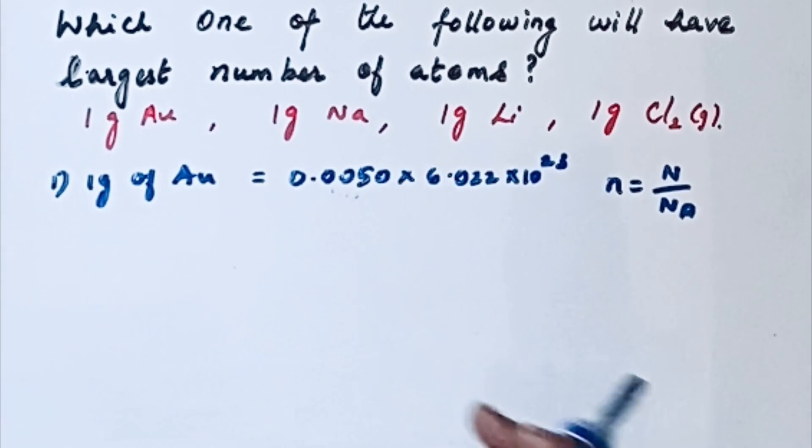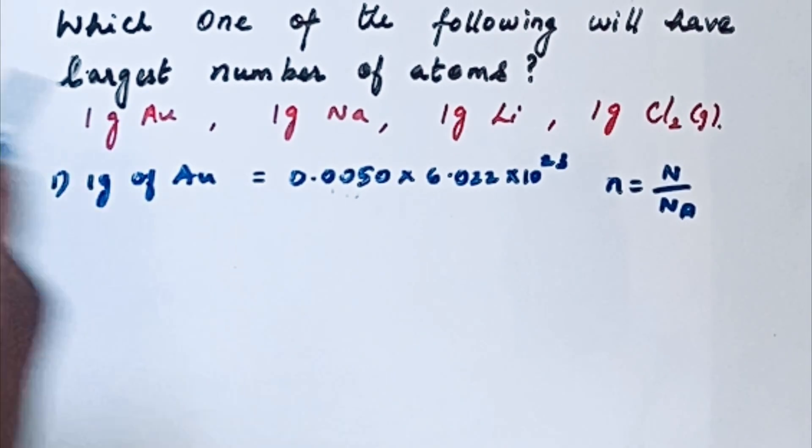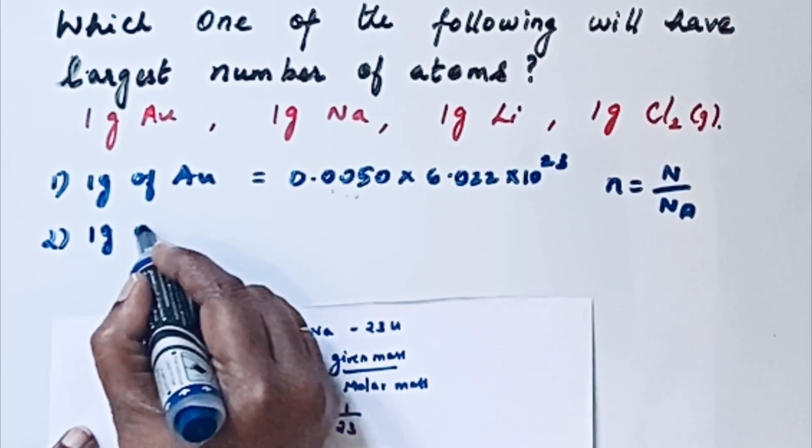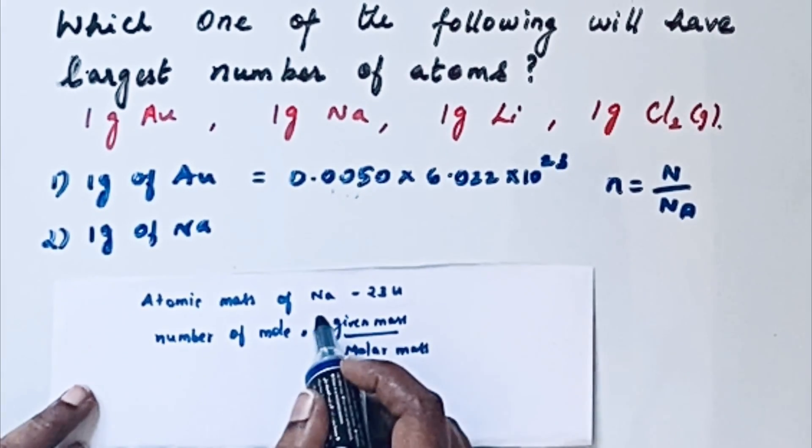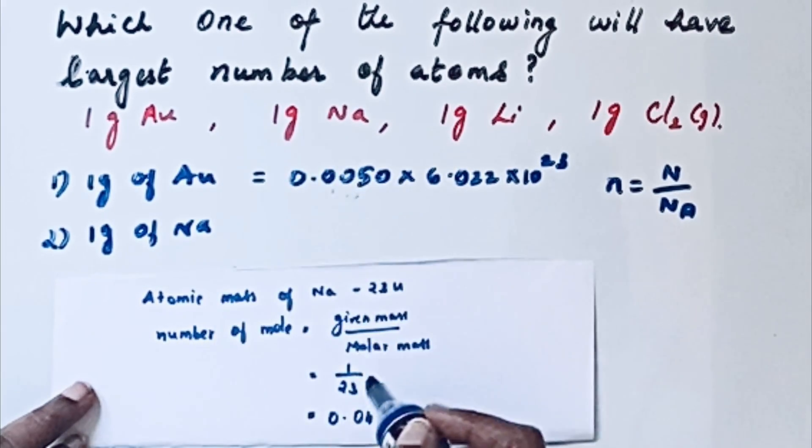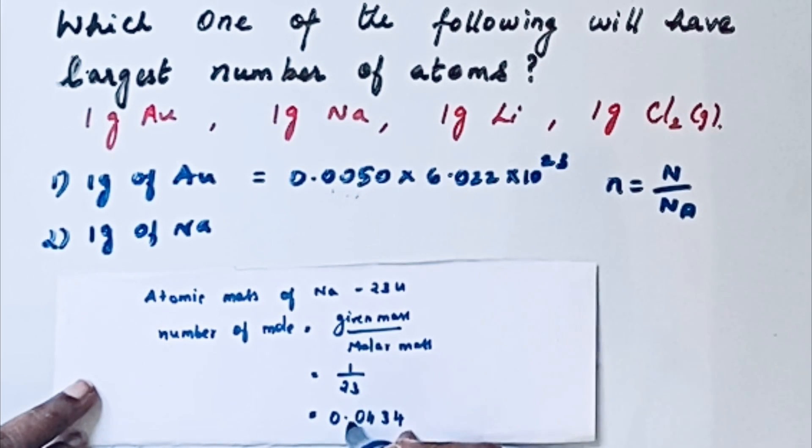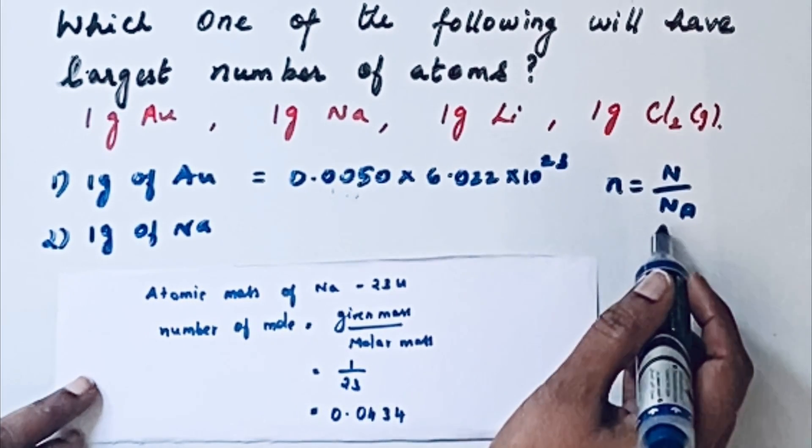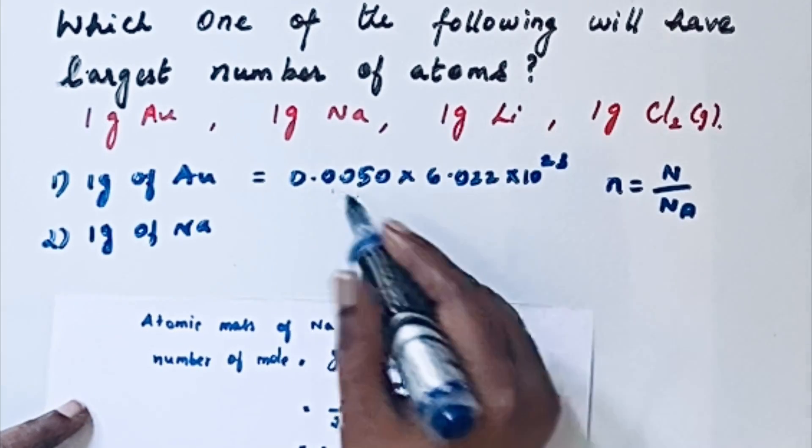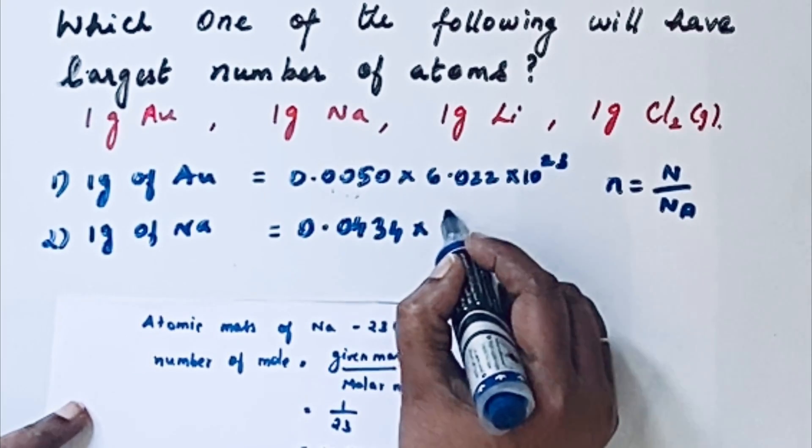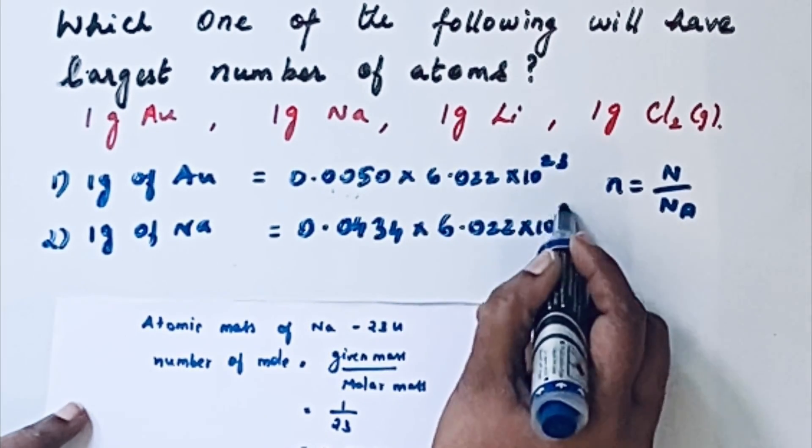Next we will see for sodium. Atomic mass of sodium is 23 u. As per the formula, given mass is 1 gram of Na, so 1 by 23, we will get 0.0434. In the same way, number of moles for sodium is 0.0434, and Avogadro is a constant, so we can write 0.0434 times 6.022 times 10 raised to 23.